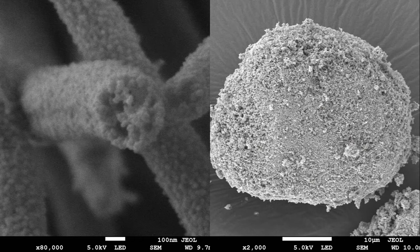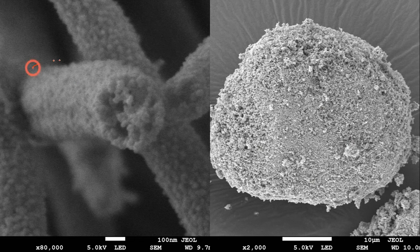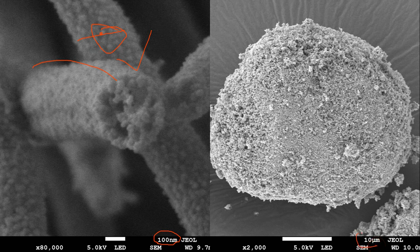Looking at this example, the scale shown is in nanometers. The small wire here has a diameter or radius below 100 nanometers, so we call it a nanomaterial. In contrast, the other sample has a scale in microns and none of its dimensions falls below 100 nanometers, which is why we call it a bulk material.